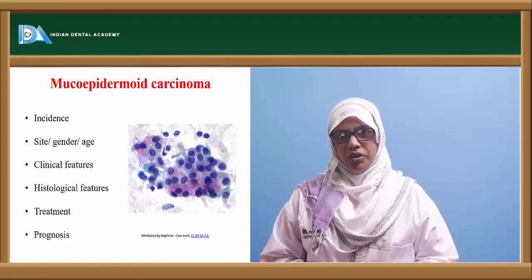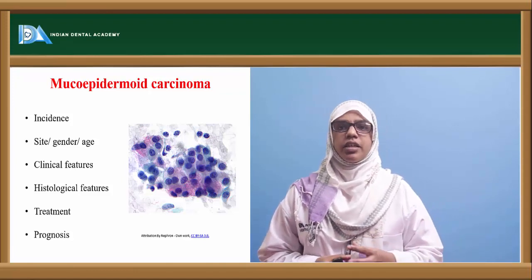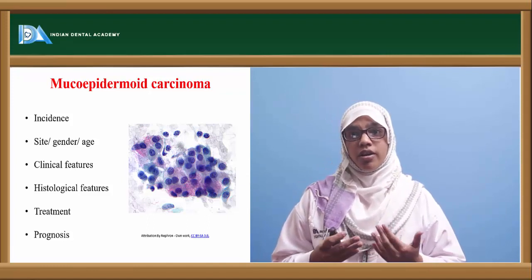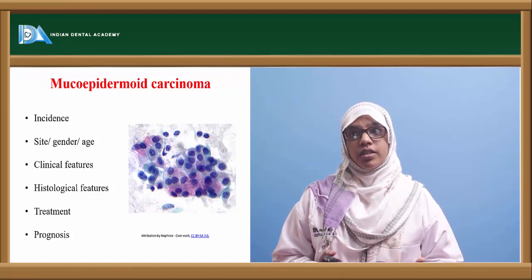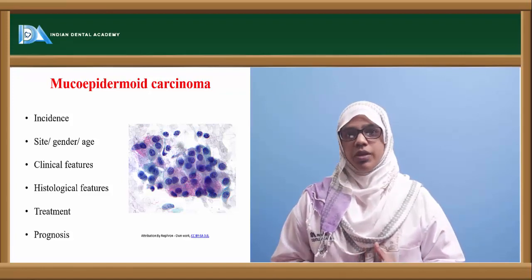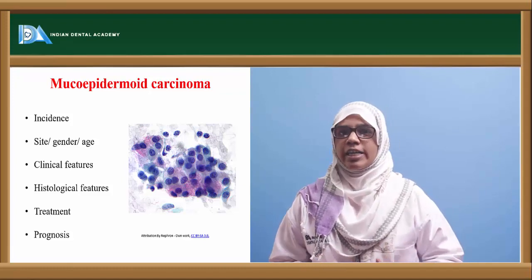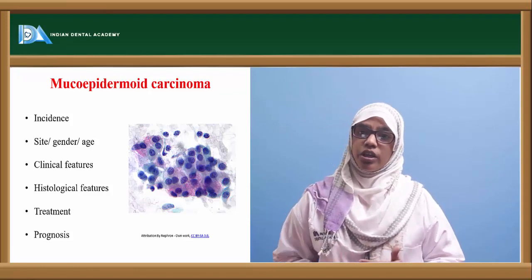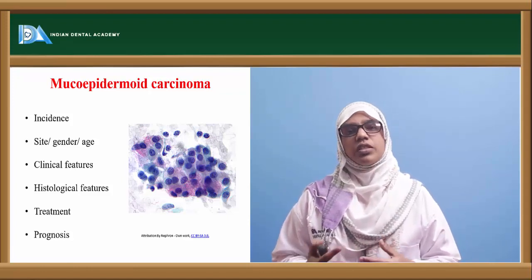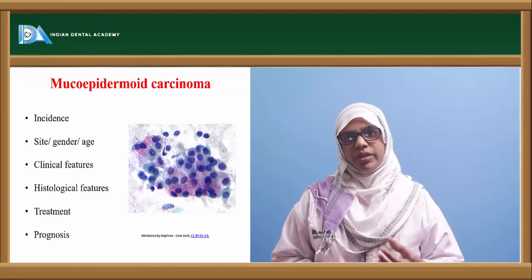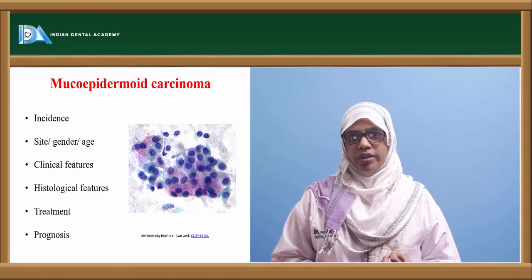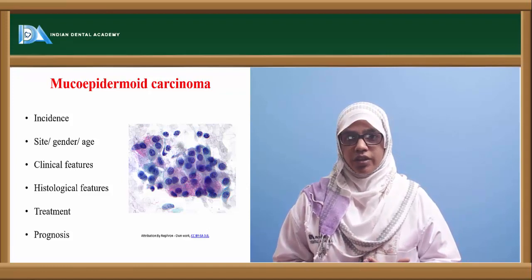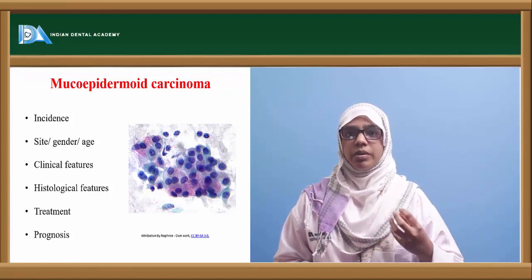Let's move on to mucoepidermoid carcinoma. It is more commonly seen in both major and minor salivary glands. This tumour is more aggressive and is known for its variable biological behaviour. It is divided into low grade, medium grade, and high grade tumour. Depending upon the grade, the clinical features differ. If it is a low grade tumour it will look like a benign swelling, but if it is a high grade tumour it will show infiltrative effects such as fixity, tenderness, and pain.